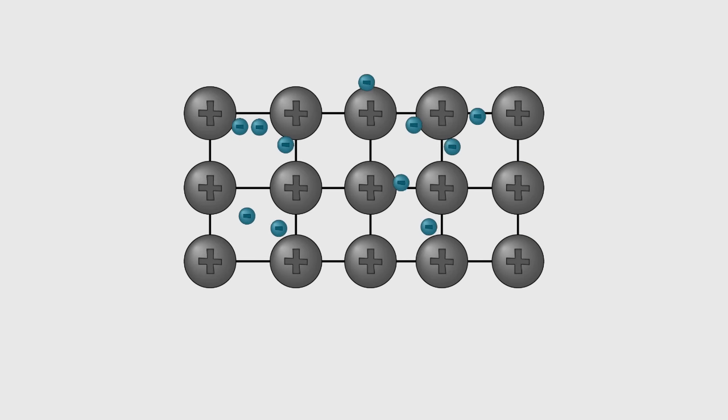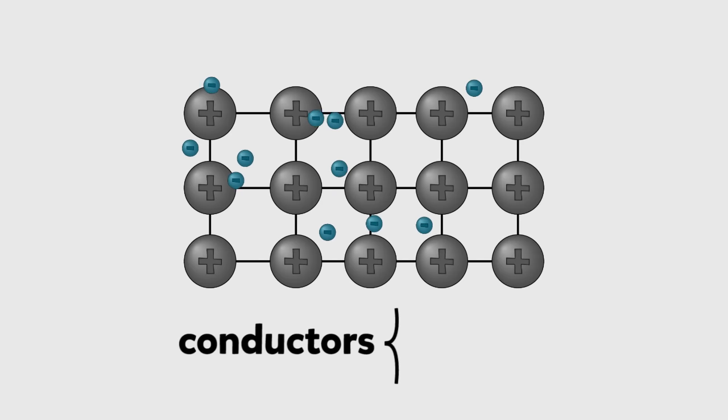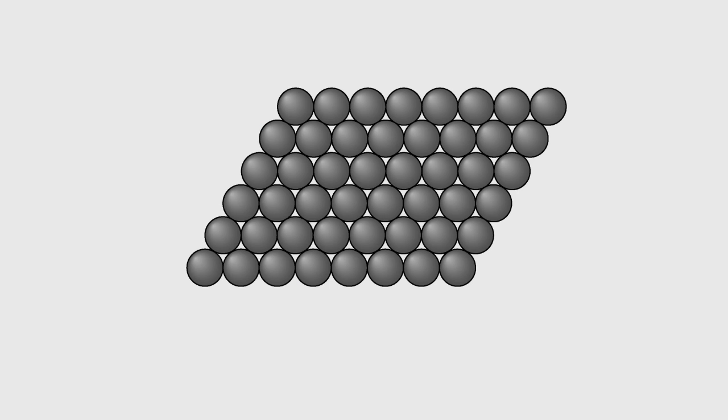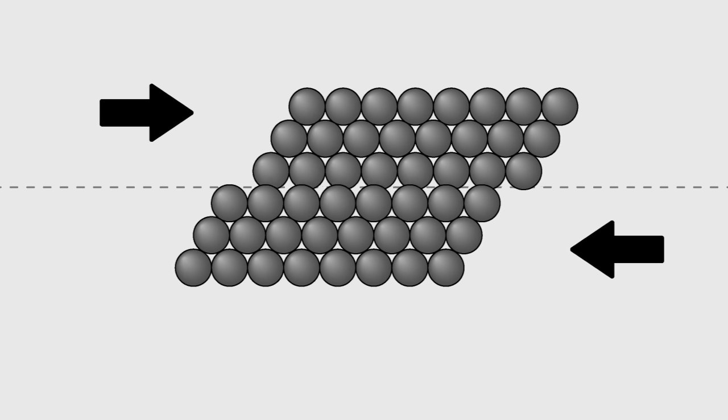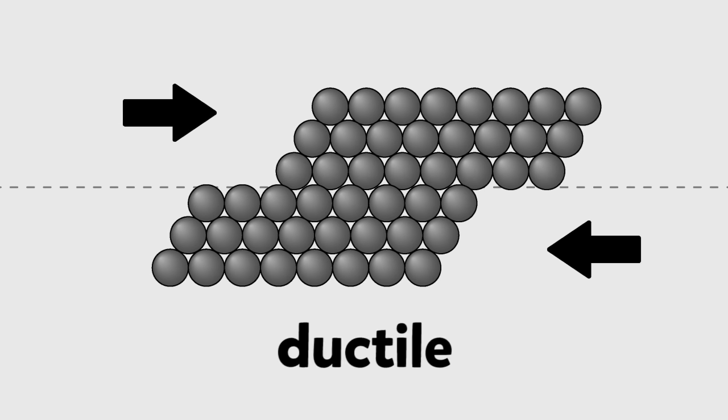Because there are still not enough electrons to complete the outer shell of any of the atoms, the electrons can move easily from one atom to another, making metals good conductors of both electricity and heat. And because the electrons are not localized in fixed bonds, the atoms can slide past each other making them ductile, allowing the metal to change shape.